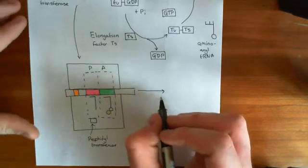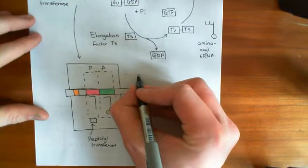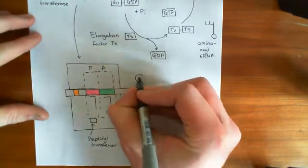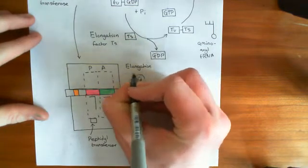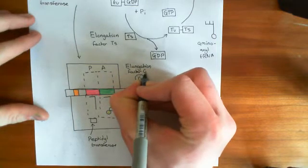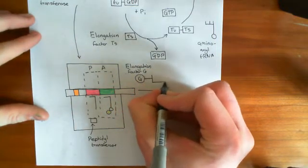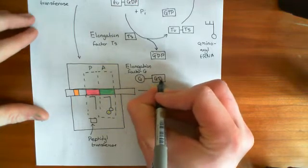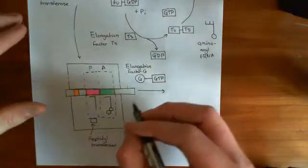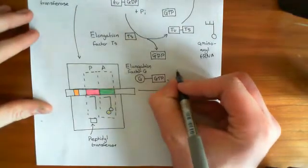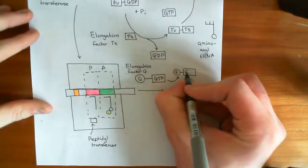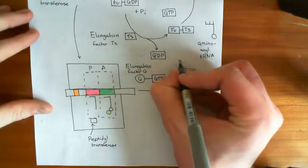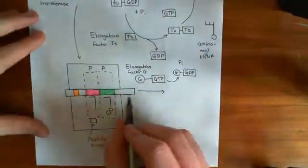The elongation factor G is important next. Elongation factor G comes along and it is bound to GTP. It comes to the ribosome and the GTP on elongation factor G is hydrolyzed to GDP and inorganic phosphate. The energy that this hydrolysis of GTP releases is then used to move the whole ribosome along the mRNA.